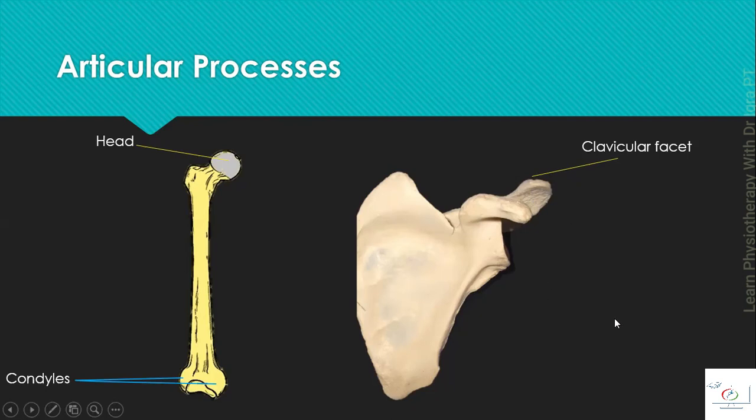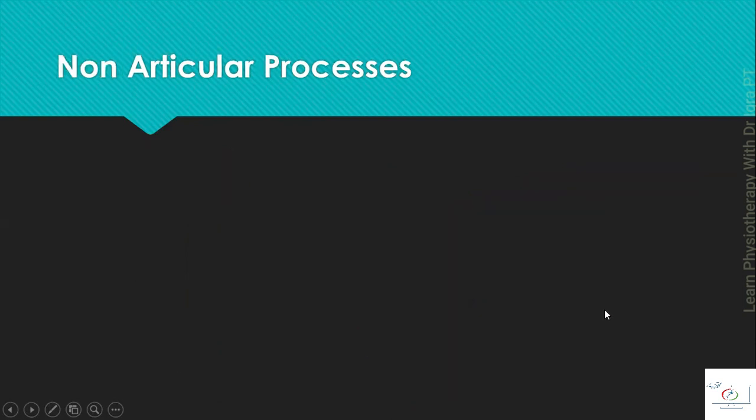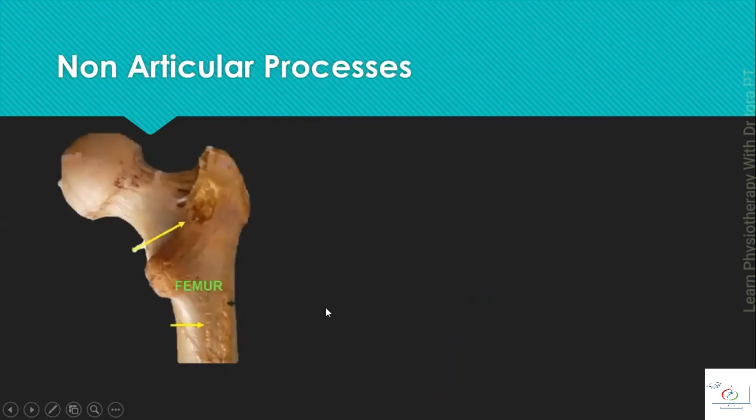Then the non-articular processes. It includes a crest and a line. We will compare both of them. The line and crest, both are ridges. Line is a thin, long ridge, while the crest is a thick ridge. The example is the pectineal line of the femur. Or the example of the crest is the intertrochanteric crest.